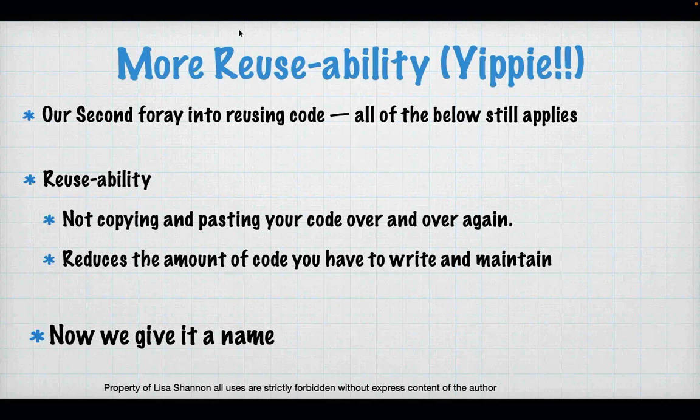We are taking a block of code and we're giving it a name, and we're giving ourselves the ability to send data into that block of code and get data out of that block. There are some new concepts and new keywords we need to deal with. We're going to deal with the keyword def, and concepts like mutability and the concept of a return, because return is also a keyword. We're giving a block of our code a name.